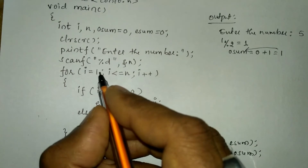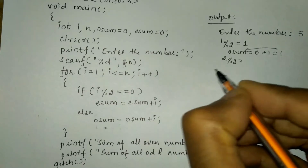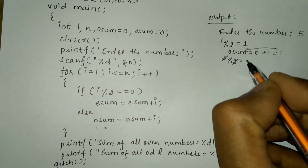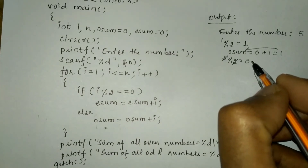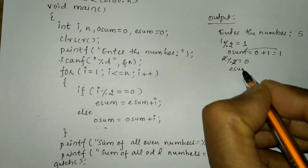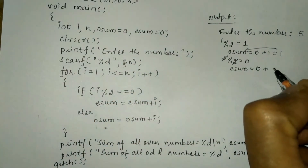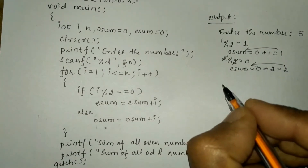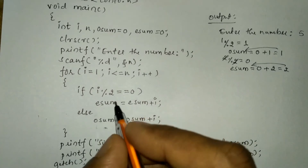Now i = 2. We check: 2 modulo 2 — 2 ones are 2, quotient is 1, remainder is 0. So 2 is exactly divisible by 2, remainder is 0, condition is true. Therefore esum = esum + i: esum = 0 + 2 = 2. Control returns to the for loop, incrementing i to 3.